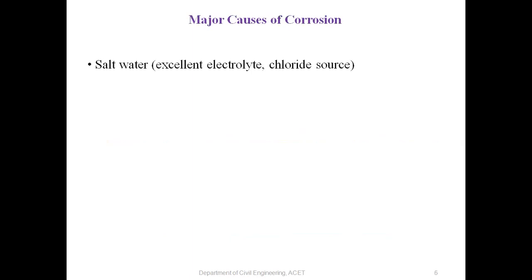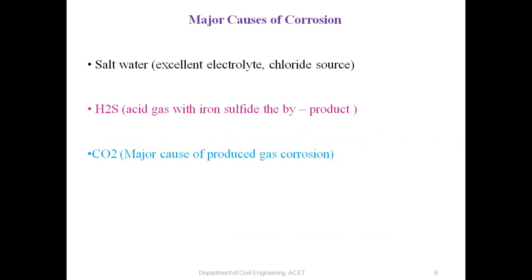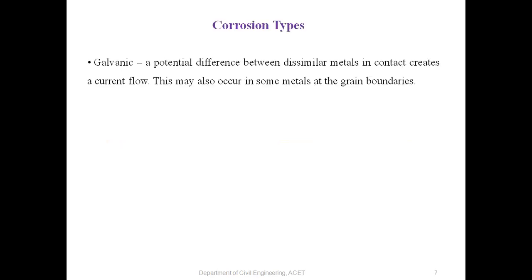H2S, acid gas with iron sulfide as the byproduct; CO2, a major cause of produced gas corrosion; and O2, a key player that should be reduced as much as possible. Corrosion types include galvanic corrosion, where a potential difference between dissimilar metals in contact creates a current flow, which may also occur in some metals at grain boundaries.